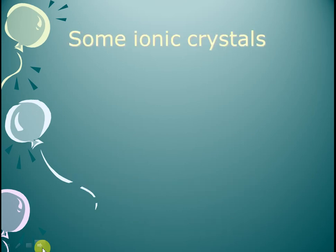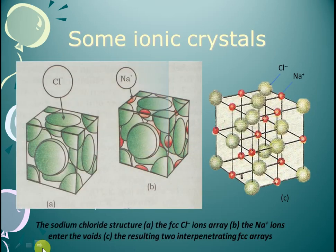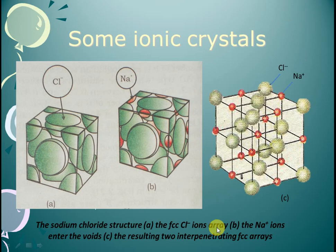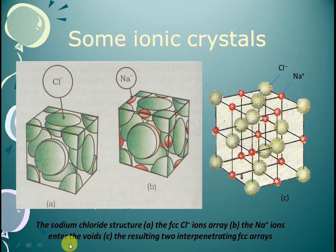Here are some crystal structures. This is a sodium chloride structure, which is a face centered cubic structure — this is the structure of chloride ions. Here is the structure of sodium ions. You can see the result of two interpenetrating FCC lattices in the sodium chloride structure.